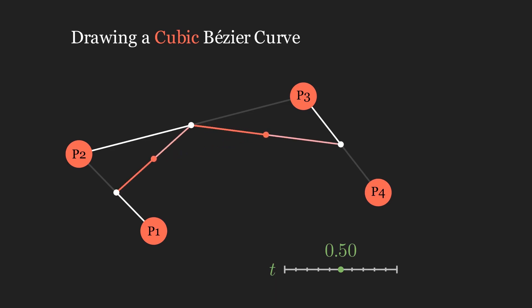Creating a linear interpolation between the three points gives us the second layer of interpolations and we are now left with two points.